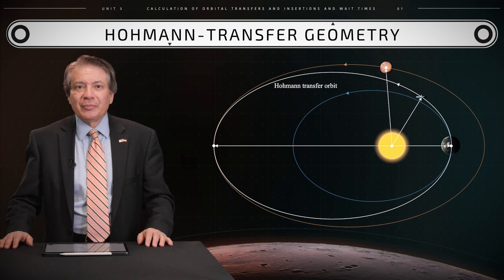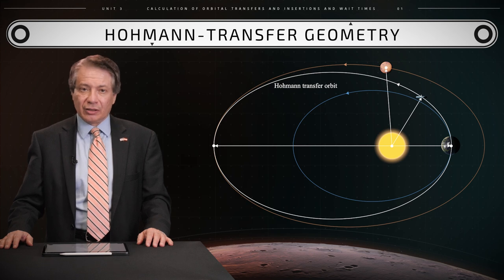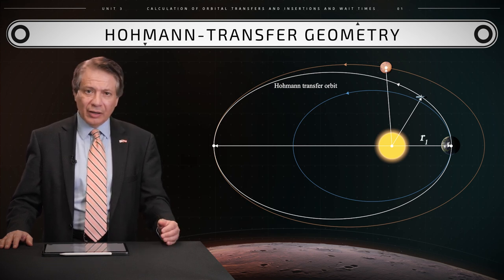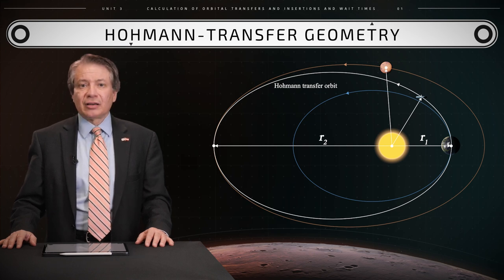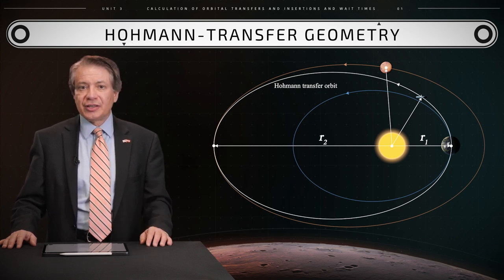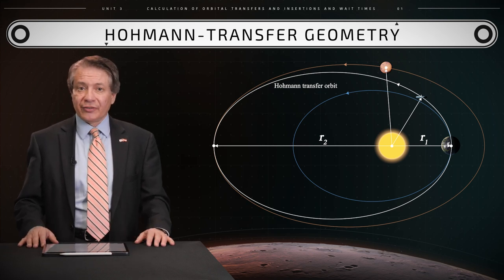In the Hohmann Transfer method, the orbits of Mars and Earth are considered to be circular, with radii R1 and R2 respectively, and only the Sun's gravitational attraction is considered to simplify the analysis of the flight of a spacecraft from Earth to Mars.